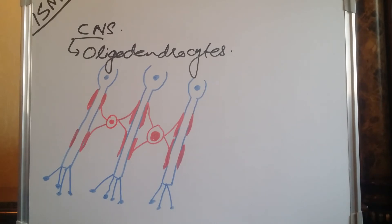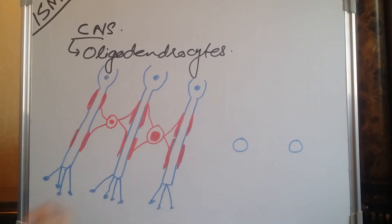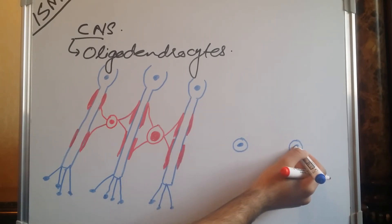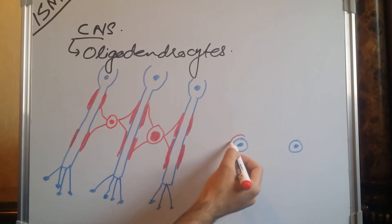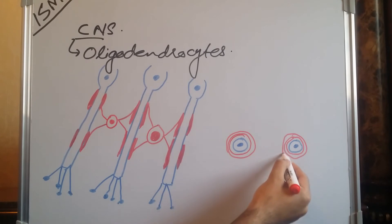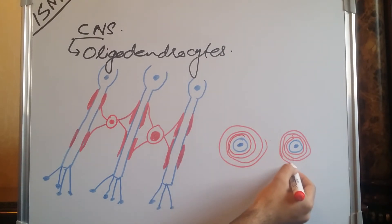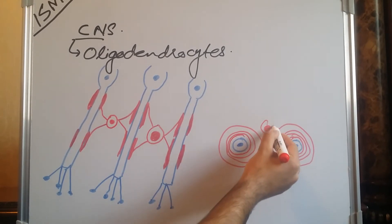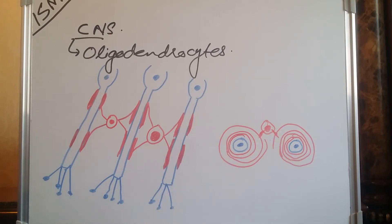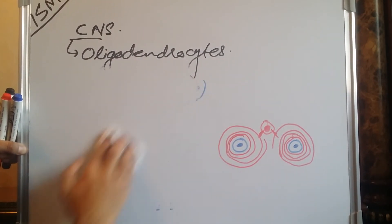If we look at the transverse section of the neuron, suppose these are two axons. These are the myelinated layers provided by a single oligodendrocyte. This is also the myelinated layer provided around the axon. The oligodendrocyte cell is providing myelination to the neurons. If any degeneration occurs in the central nervous system or peripheral nervous system regarding these myelinated layers, that becomes a pathological condition.